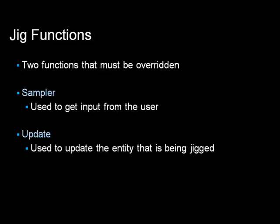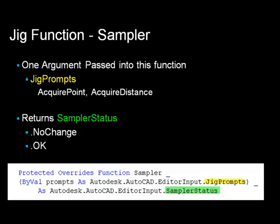In the class that is inherited from EntityJig, we need to override two functions: Sampler and Update. The Sampler function is used to get input from the user, such as size and location. In the Update function, you update the display of the entity. The Sampler function takes one argument — a JigPrompts of EditorInput. JigPrompts is used in the Sampler function to control what happens when the entity is being dragged. For example, you can use the AcquirePoint function to get a point, or AcquireDistance to get a distance from the user.